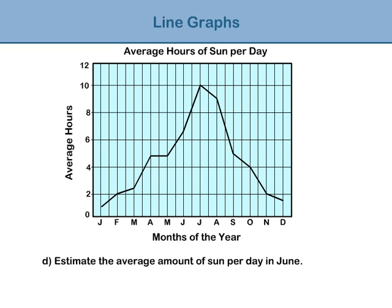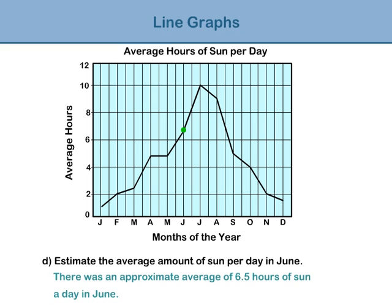Question d: Estimate the average amount of sun in June. We read along the x-axis to June, go up the line on the graph, and then read on the y-axis that it is a quarter of the way between six and eight hours. A good estimation would therefore be 6.5. There was an approximate average of 6.5 hours of sun a day in June.